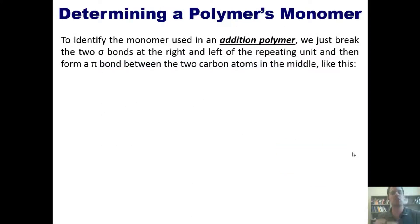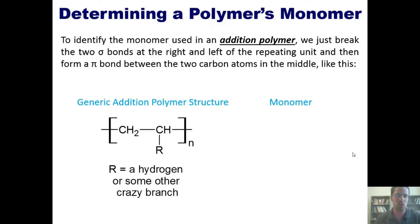So now I want to teach you how to determine what monomers are used in a given polymer. To identify a monomer used in an addition polymer, any of these kinds of polymers I just showed you, all we do is break apart the two sigma bonds at the right and the left of the repeating unit and then form a pi bond between the two carbon bonds in the middle, just like this. So once again, I've got any kind of addition polymer, such as polyethylene, polypropylene, PVC, or any of the others that I just showed you. If you're asked to determine what the monomer is that is used to construct this polymer, all you do is break the sigma bond over here to the left of this carbon, break the sigma bond over here to the right of this carbon, and then form a double bond between those two carbons, giving you this. Got it?